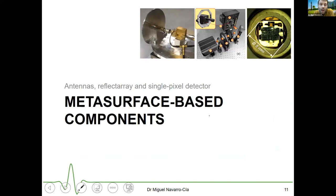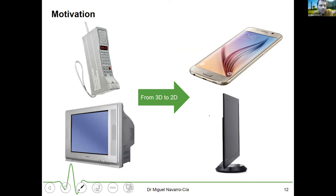That concludes the metamaterials section. Let's move on to metasurfaces-based components, mainly antennas and detectors. The motivation is that the world is moving from 3D to 2D - TVs and mobile phones have become flat and compact. We need to replicate the same functionalities that metamaterials provide, but in a 2D platform: metasurfaces.